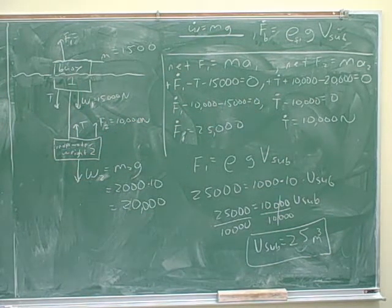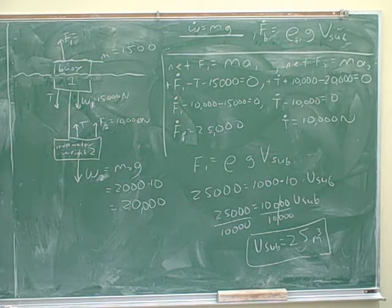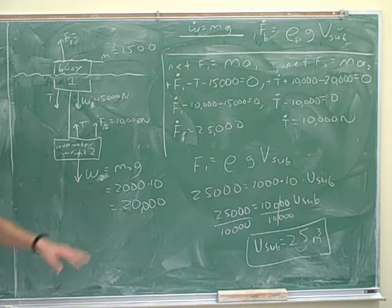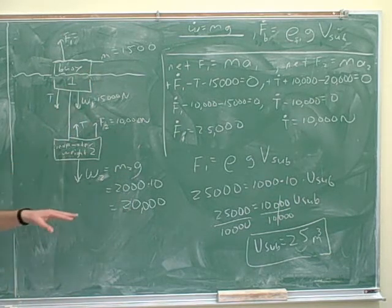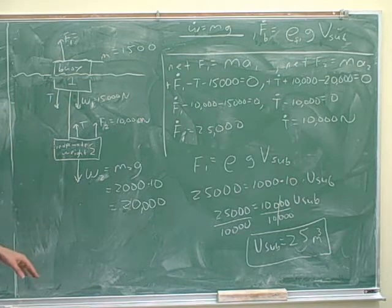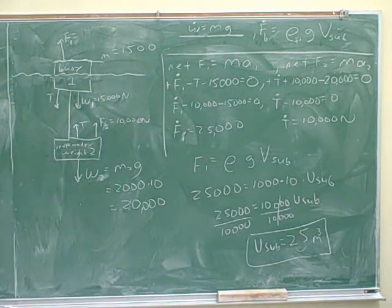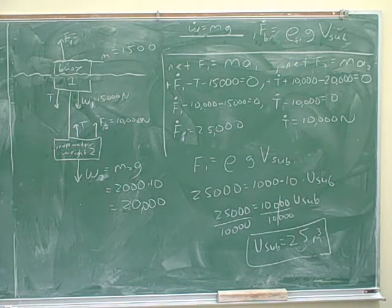One other point is, we don't need to worry about the apparent weight unless the question actually asks us for that. It's true that this is not going to feel like it weighs 20,000 Newtons, but that doesn't make any difference for solving this type of problem unless they ask us for that. The actual weight is always M times G. So we didn't need that more difficult concept of apparent weight here.